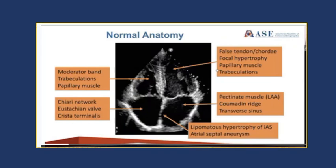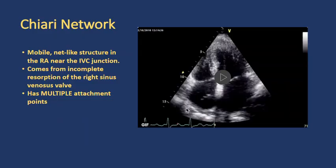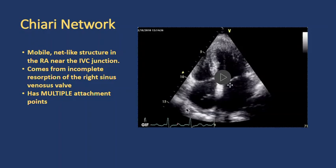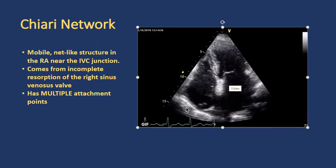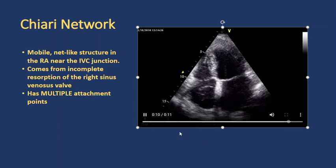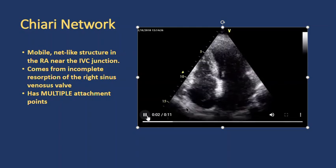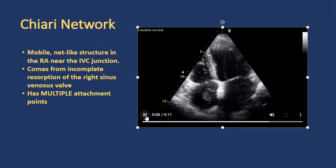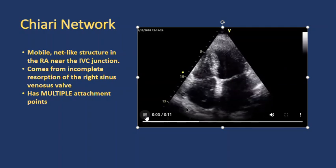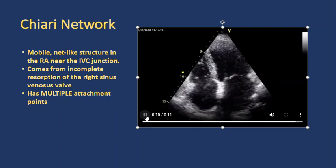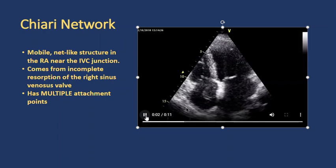Now let's turn our attention to the three structures in question in the right atrium. First is the Chiari network — a mobile, net-like structure in the right atrium near the IVC junction. It comes from the incomplete reabsorption of the right sinus venosus valve and can have multiple attachment points. Sometimes it can look very prominent — to me it looks like party streamers or one of those inflatable waving figures at a car dealership. It can look really thick and almost indistinguishable from a thrombus coming from the SVC or IVC, in which case further investigation is warranted if thrombotic risk is elevated.